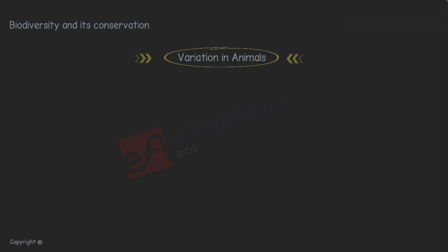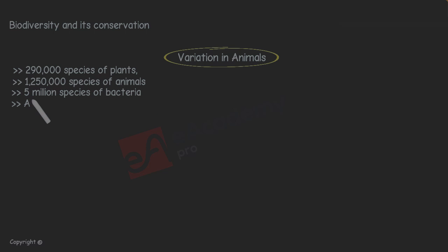So far, the scientists have identified around 290,000 species of plants and 1,250,000 species of animals and 5,000,000 species of bacteria living on our planet. Animals can be divided into two groups.